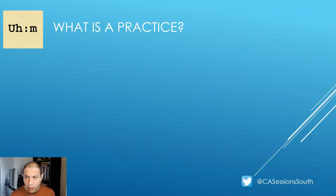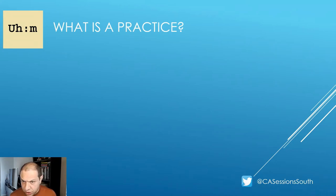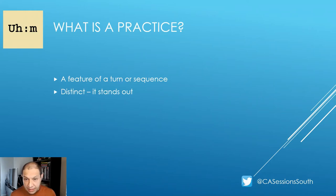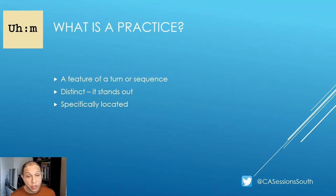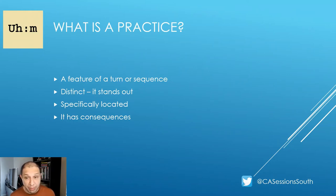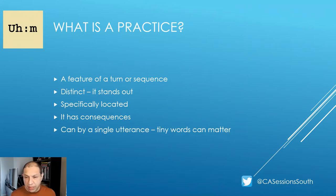Which leads us to a further question: what is a practice? Compared to actions such as asking, requesting, and informing, the concept of a practice is a bit more tricky. As John Heritage describes it, practices can be considered as features of a turn or sequence that are distinct in their presentation — some may stand out, others are much more subtle. These practices will occupy a specific location within a turn or sequence, and they will matter — that is, they will have consequences for what happens next. And these practices needn't be complicated; a practice could be a single utterance. There is a body of research on tiny words that matter, such as 'oh' and 'um'.